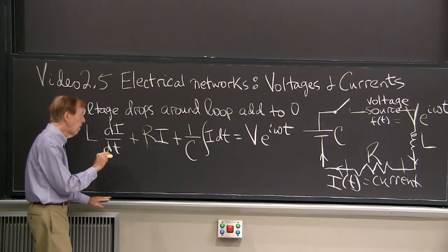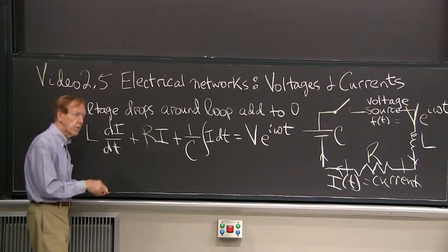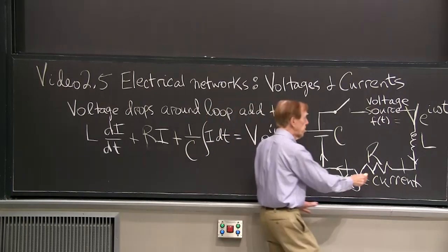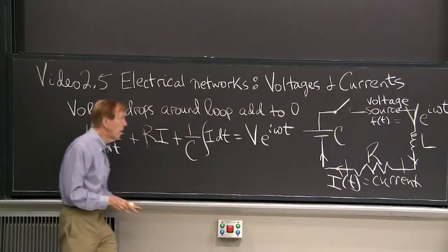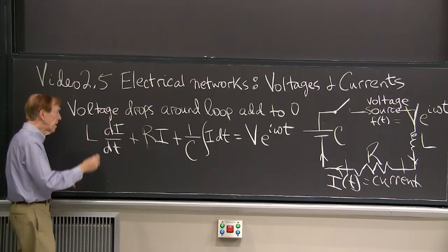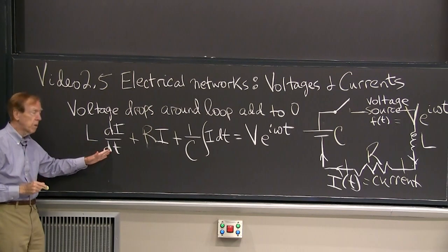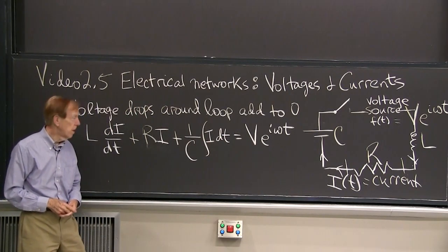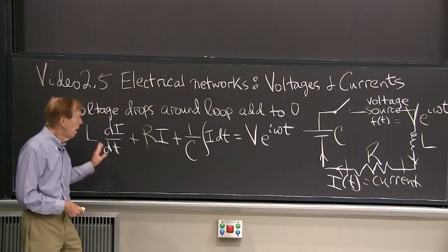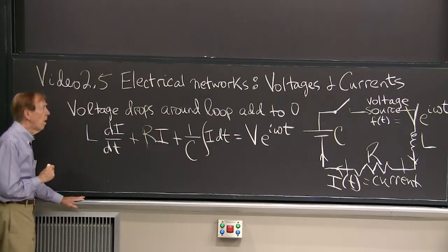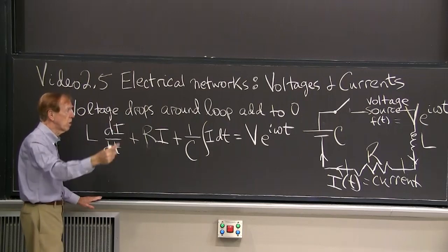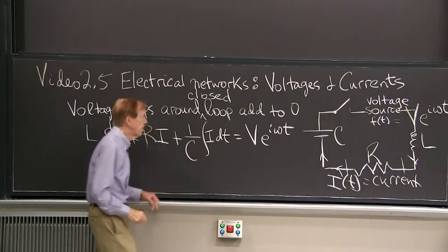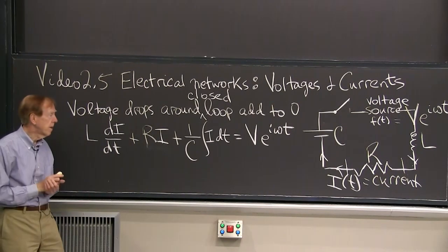But now my current is changing with time. It's this alternating current. It's going up and down. So the current is also going through the inductance. And there, the voltage drop across the inductance has this form. The derivative of the current comes into it. And in the capacitance, which is building up charge, the integral of the current comes in. So that's the physical equation that expresses this voltage law, which says that around a closed loop, this is a closed, loops are closed, add to 0. So I have four terms, and they combine to give 0.